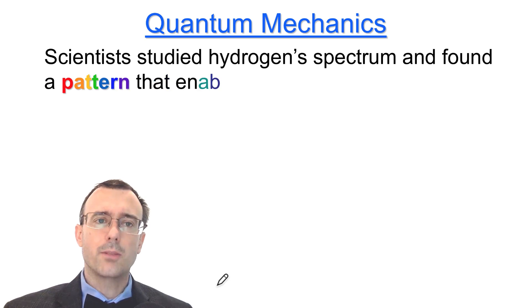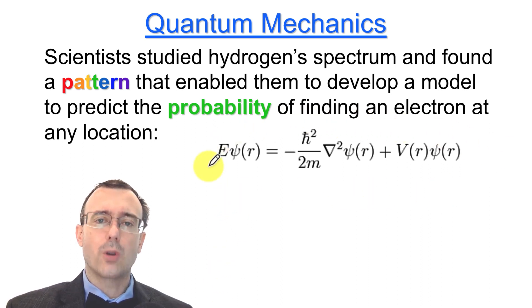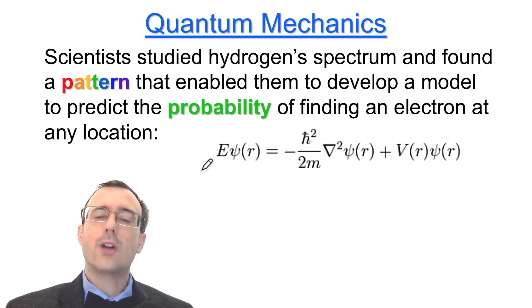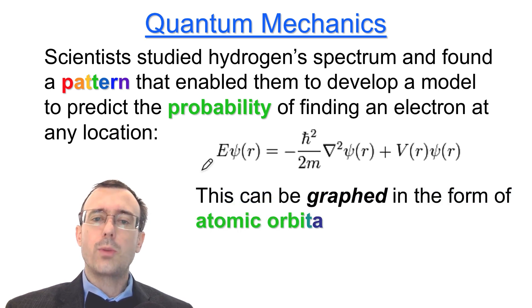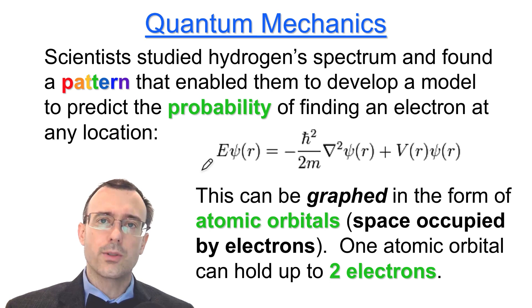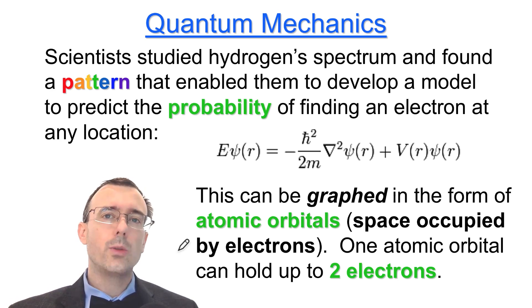Scientists studied hydrogen's spectrum and found a pattern, which enabled them to develop a model to predict the probability of finding an electron at any location. This equation is known as the Schrödinger equation — a very complex equation which we're not going to solve in this class. However, it's already been solved for us, and the solutions have been graphed. Those graphs are called atomic orbitals. An atomic orbital is literally the space occupied by the electrons — it tells you the probability of where you're going to find those electrons. Because one atomic orbital can hold only two electrons, most atoms have a lot of different atomic orbitals.